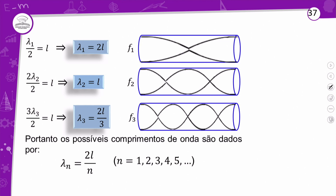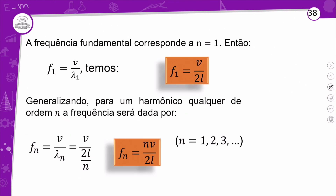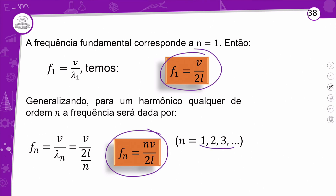Quando o tubo é aberto dos dois lados, como é ventre dos dois lados, eu vou ter meio comprimento de onda. Depois, 1 comprimento de onda, e assim por diante. Antes era um nó e um ventre; agora é só ventre. Para finalizar, F1 = V sobre 2L com o tubo aberto, e a frequência pode ser NV sobre 2L, com N sendo 1, 2, 3 — números inteiros.